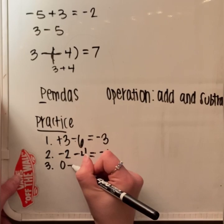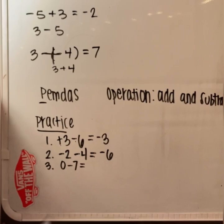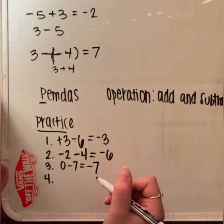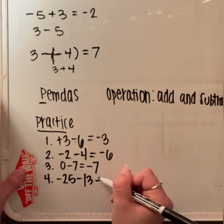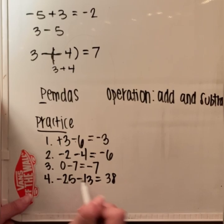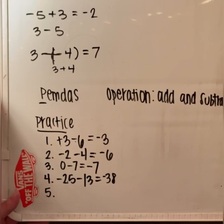Number 3: 0 minus 7. Zero doesn't have any value, and we're subtracting 7, so 0 and negative 7 — our answer isn't going to change, it's just going to be negative 7. Number 4: negative 25 minus 13. Same sign, so we combine. 5 plus 3 is 8, and 2 plus 1 is 3 — they both have a negative sign at the front, so the answer is negative 38.